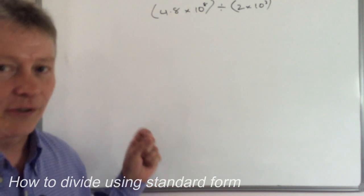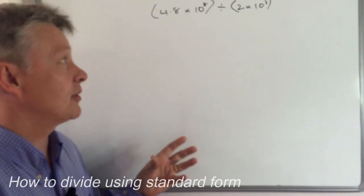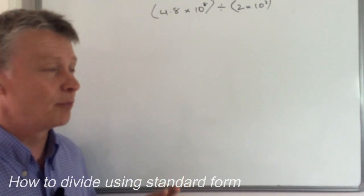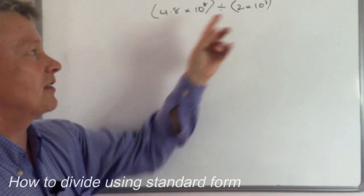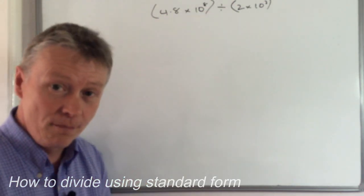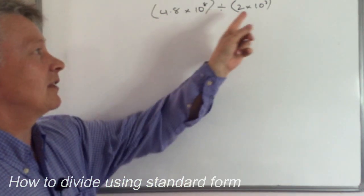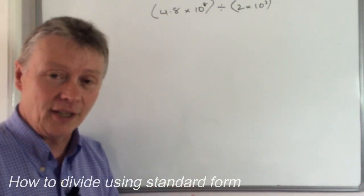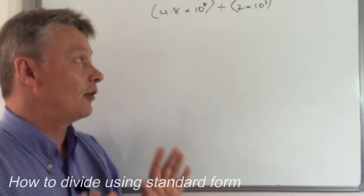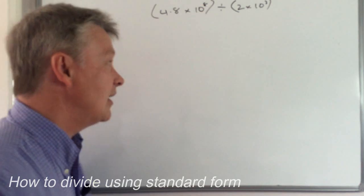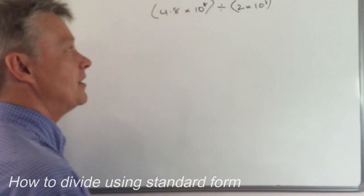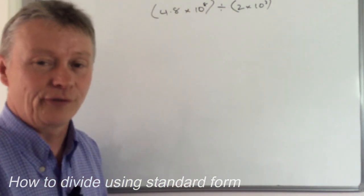So if you remember from the multiplication video, what I suggested is that you put the two parts together where it's dealing with the actual numbers and then the parts that are dealing with the standard form element you treat separately. So I'm going to do exactly the same here. I need to create a number which is in standard form format.